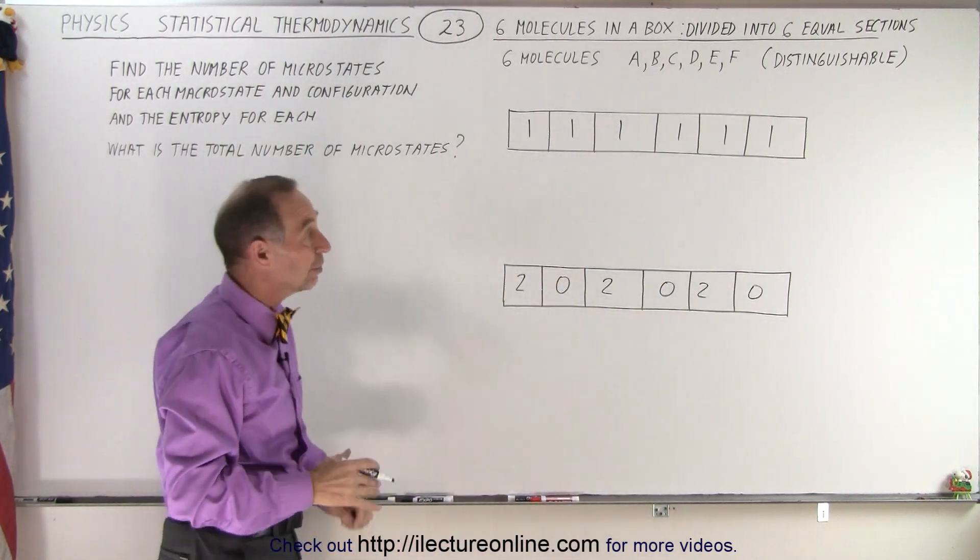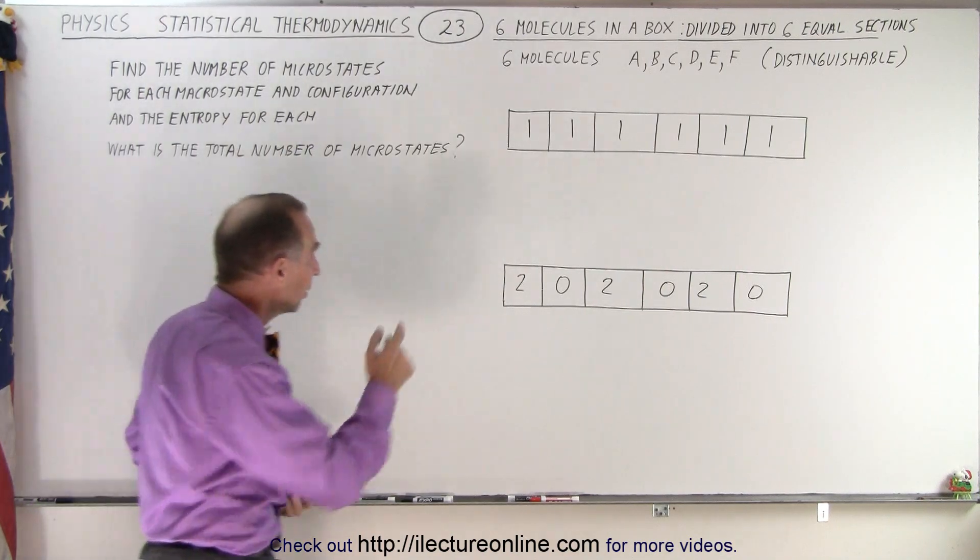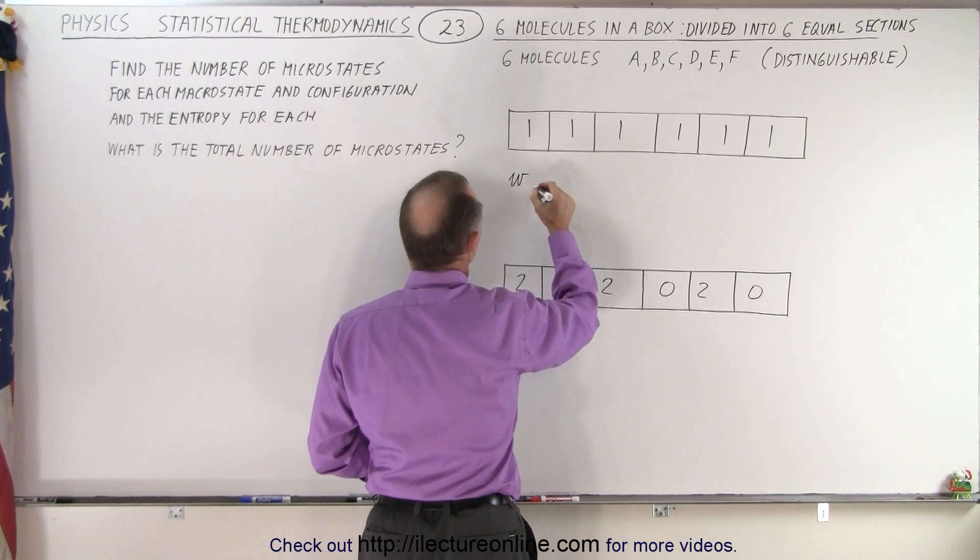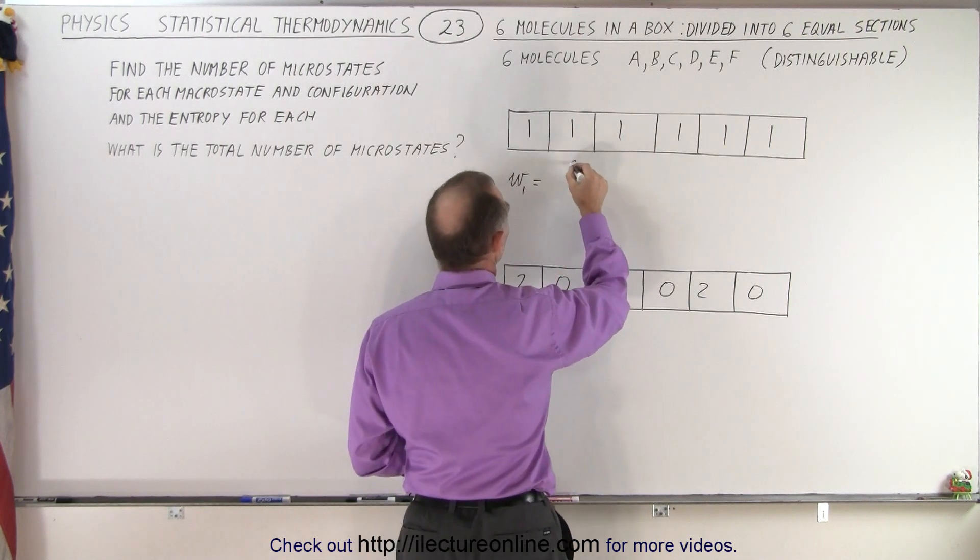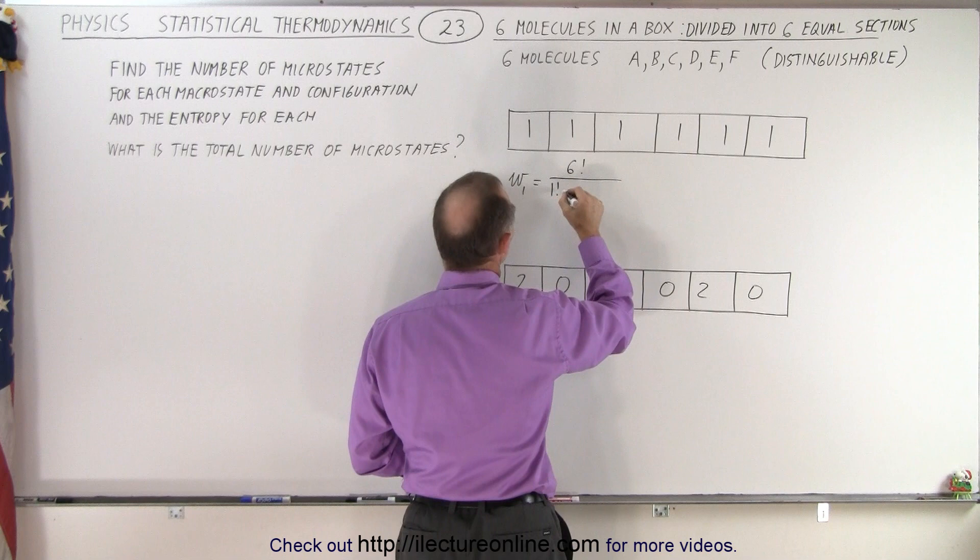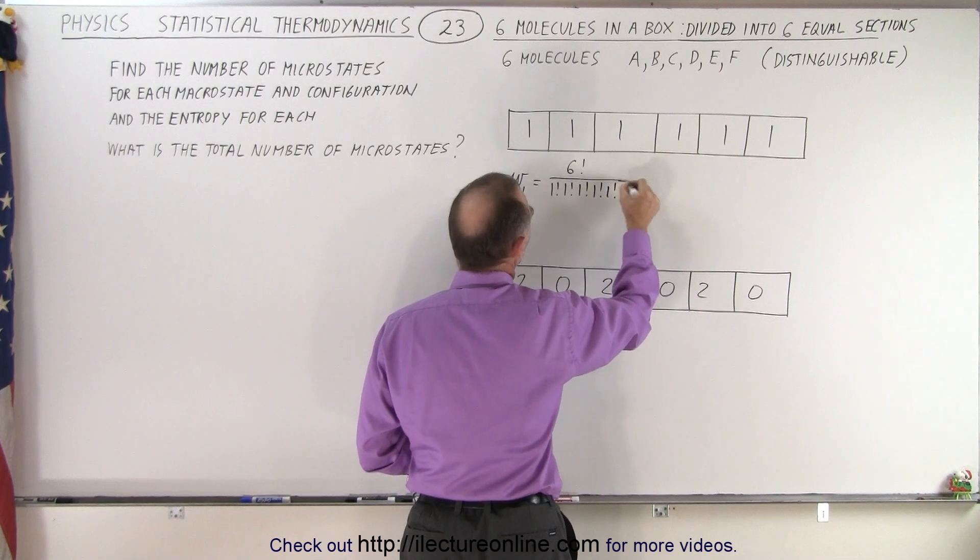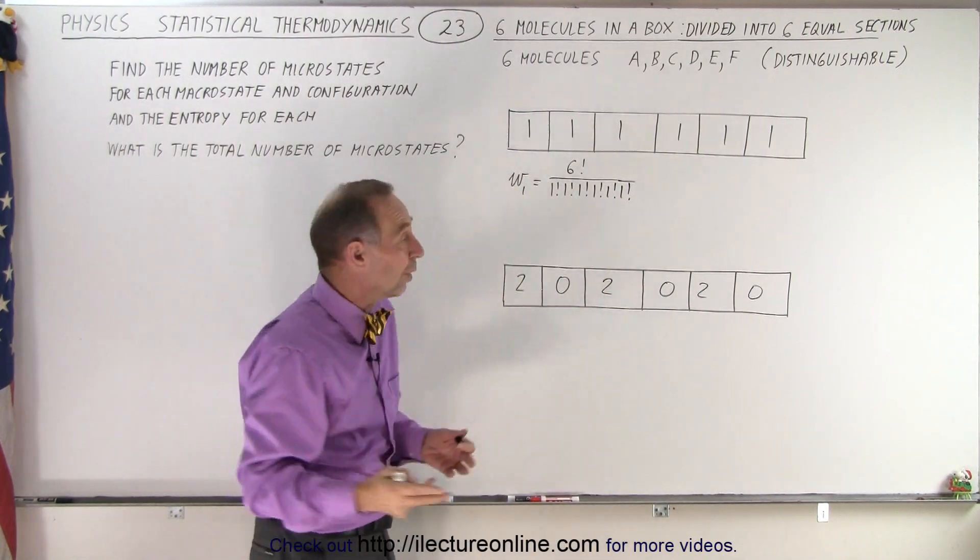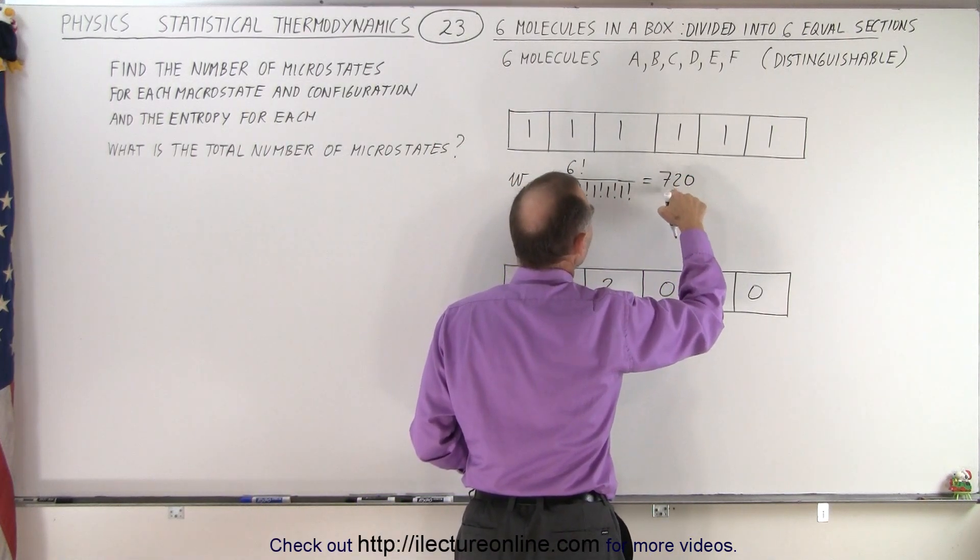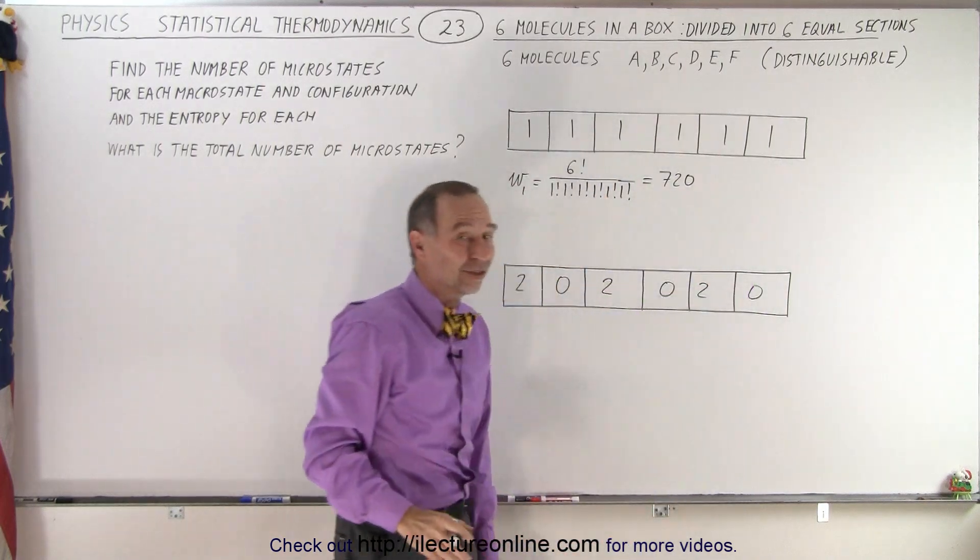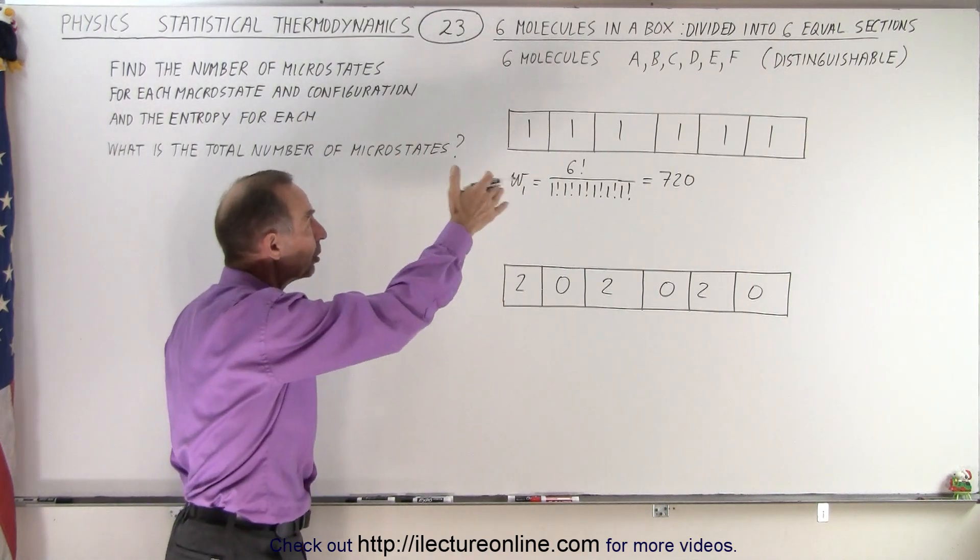So in these two configurations, these two particular macrostates, what is the number of microstates? Well in this case we can say that w sub 1, we'll call this the first macrostate, and that's going to be equal to, we have six molecules and now we divide that by 1 factorial times 1 factorial times 1 factorial times 1 factorial. Well you know that 1 factorial equals 1 so the denominator is 1, the numerator is 720, so it's a total number of 720 microstates in a situation like this. There's 720 different ways in which the molecules can be rearranged when the molecules are distinguishable and there's six of them.